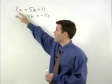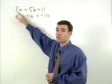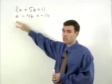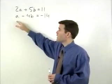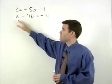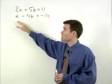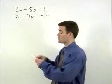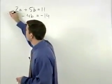Notice that we have a 2a in our first equation. If we had a negative 2a in our second equation, then the a's would cancel out. In order to create a negative 2a in the second equation, we simply multiply both sides of the second equation by negative 2.